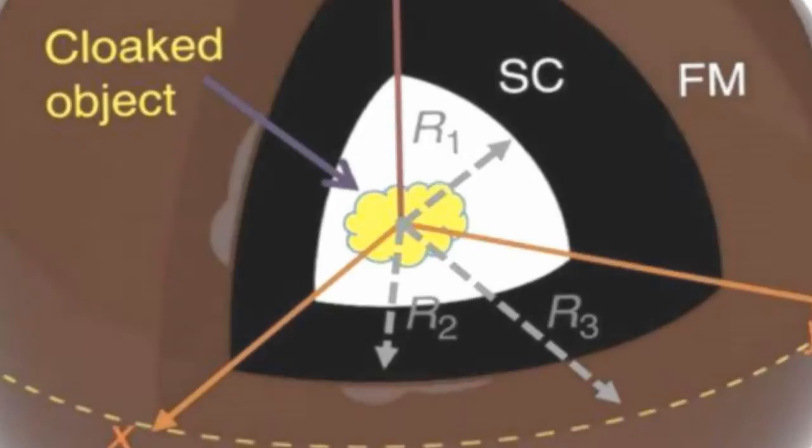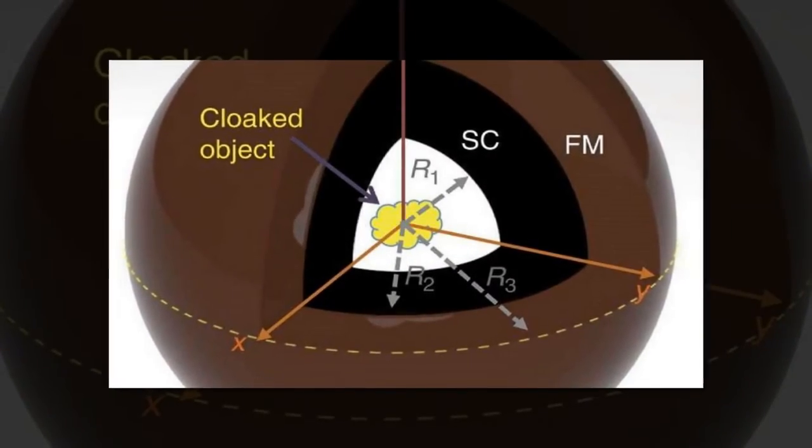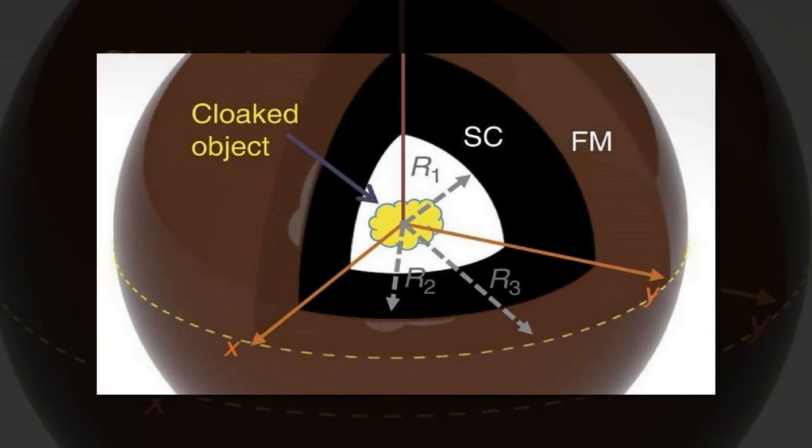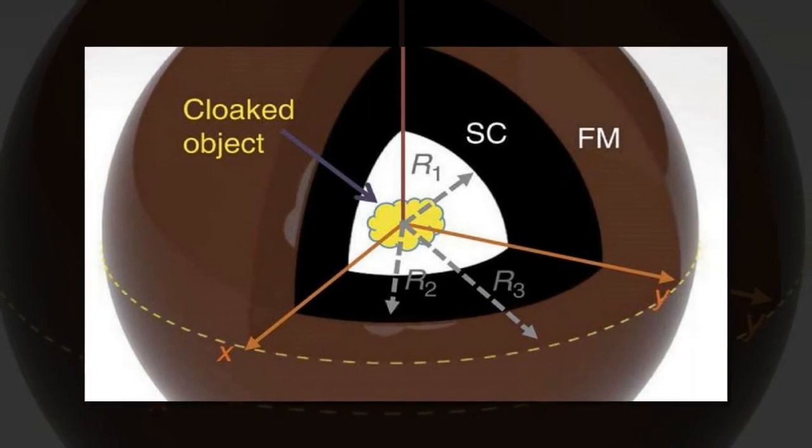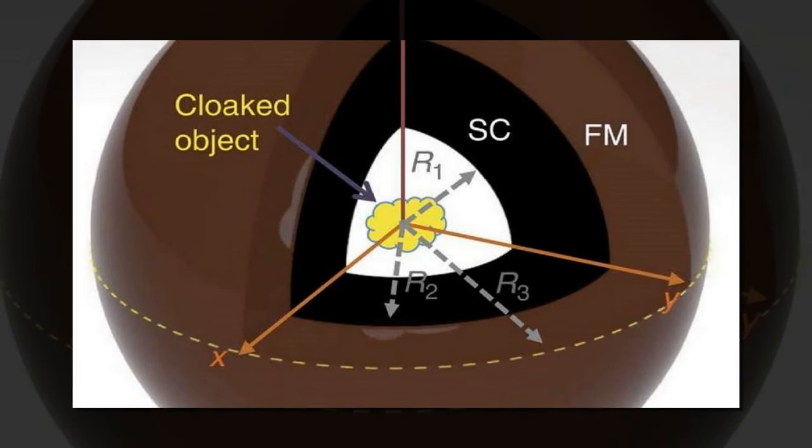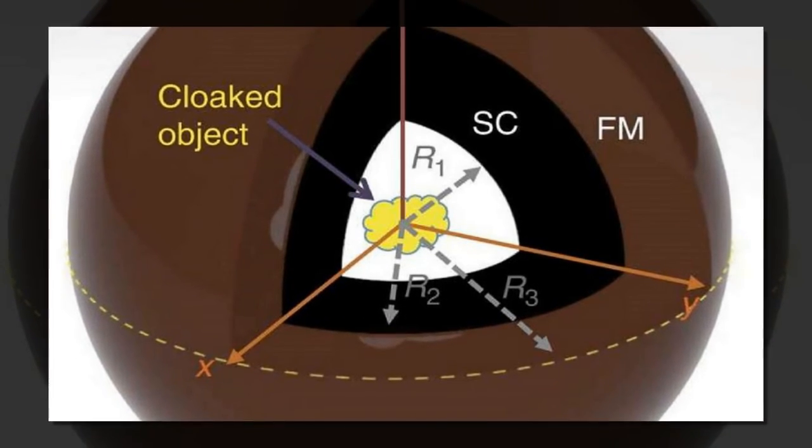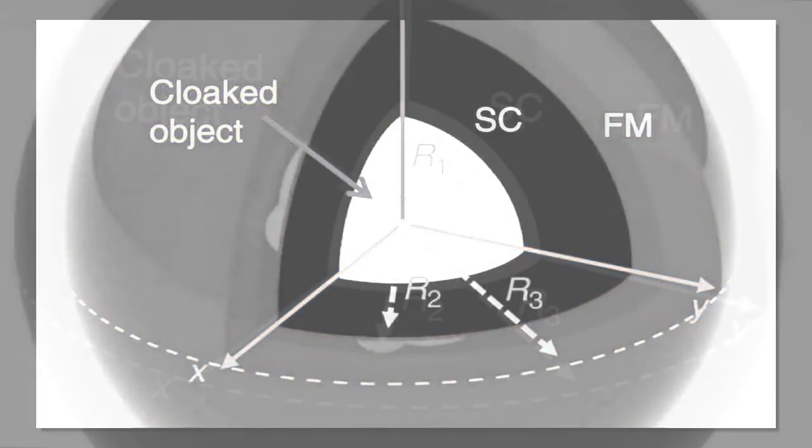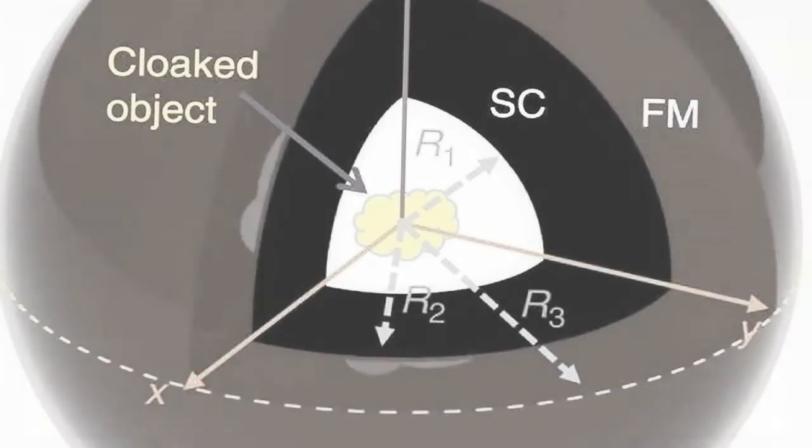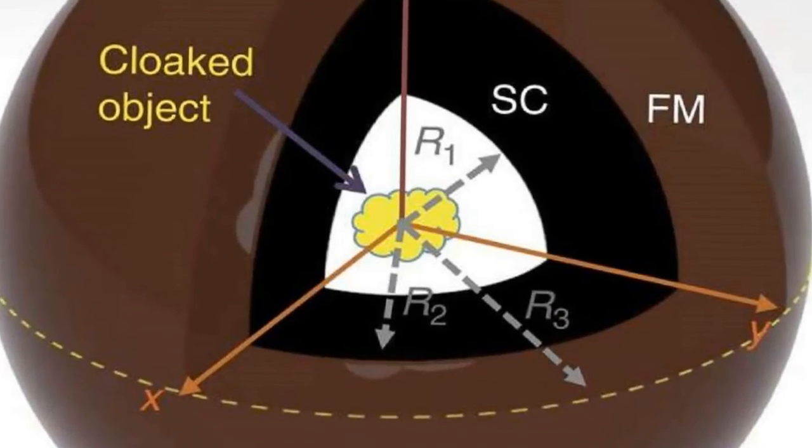This causes them to have opposite effects on an external magnetic field. The inner YBCO shell expels the magnetic field, while the outer nickel-zinc shell concentrates it. By carefully machining, etching, fine-tuning, and combining these materials, the researchers were able to completely cancel out the opposing effects, inducing the magnetic transparency effect.